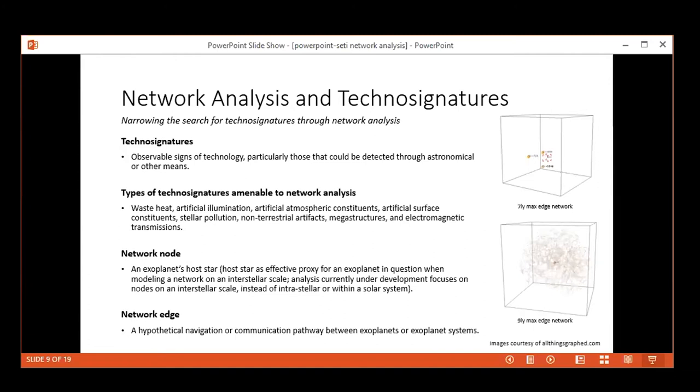In the current analysis we're doing with one study project, we're using the exoplanet's host star as the node because we're working across interstellar distances. When I say planet, the data we're using is from the NASA Exoplanet Archive. As far as the network edge, that's a bit more complex to work with versus just a network node. We define a network edge as a hypothetical navigation or communication pathway between exoplanet systems or host stars. You can see on the right we can do two-dimensional and three-dimensional visualizations. These are stills from that.